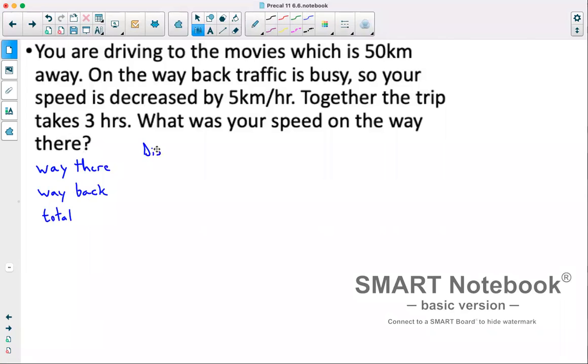Now our distance we know is the same on the way there and on the way back. It's 50 kilometers each way. In total, that's 100 kilometers. Now speed, we'll say the speed on the way there was x, and then on the way back is 5 kilometers slower. So that'd be x minus 5.